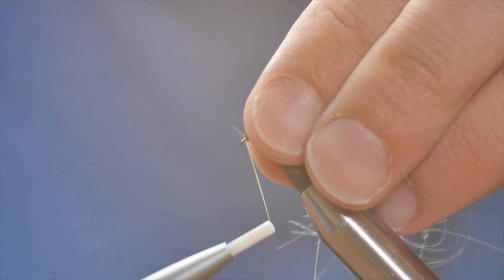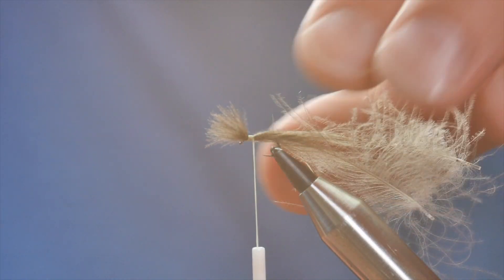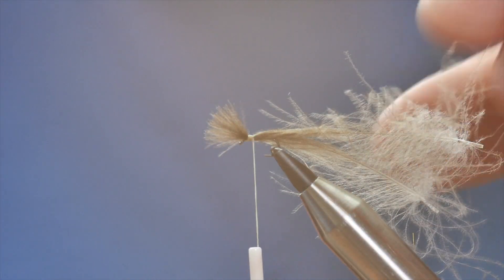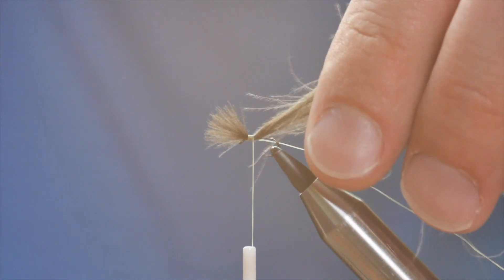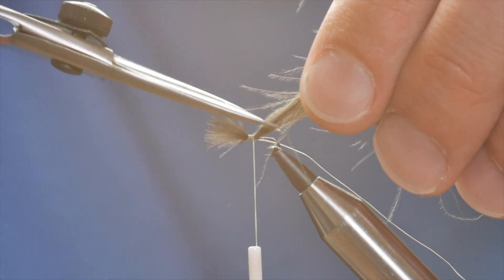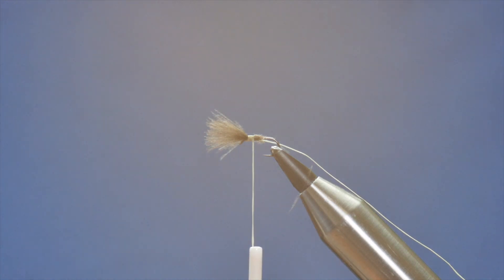I'm going to move everything back, put one turn in front and then come back and catch that in. Now I don't want to cut this straight. I'm going to cut it at an angle so I can get a tapered body and just remove your waste.